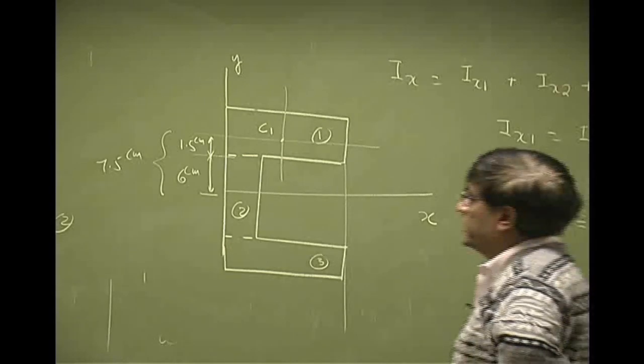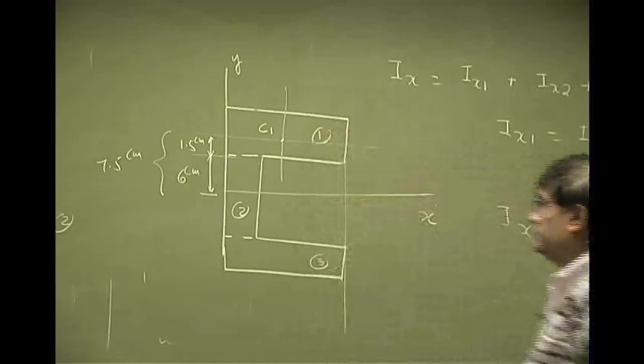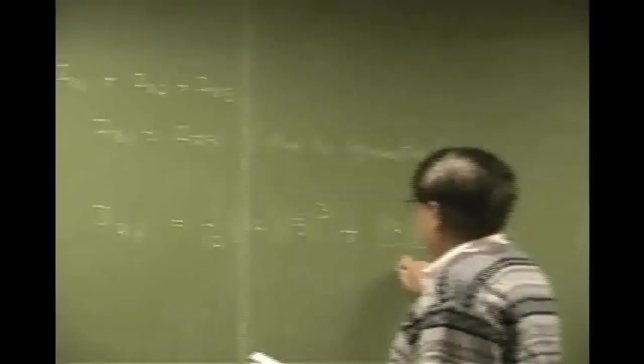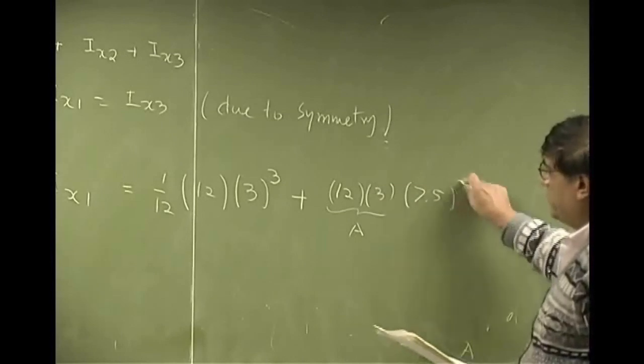Now, the inertia of rectangle 1 about this axis will be 1/12. Then you have the height as, the width as 12, height as 3. So 1/12, 3 cubed. Plus, you have to add the other part of this. That means you are going to take the area which is 12 times 3, that is the A, multiplied by the square of the distance between those two axes.